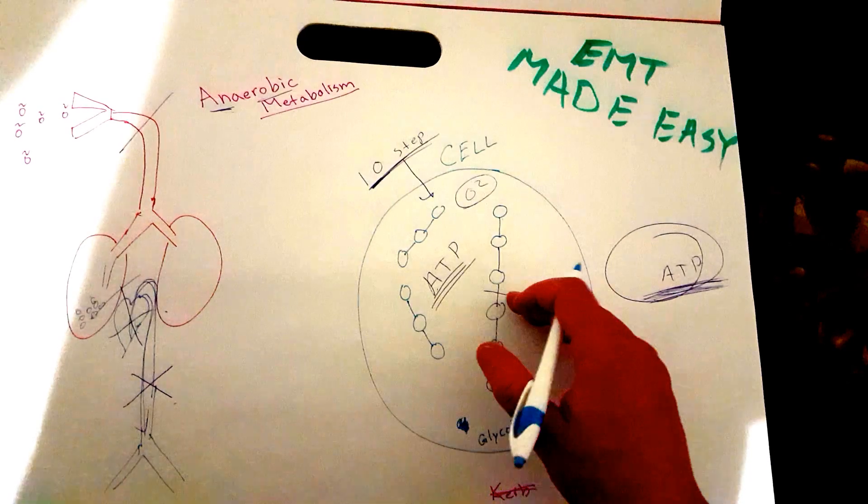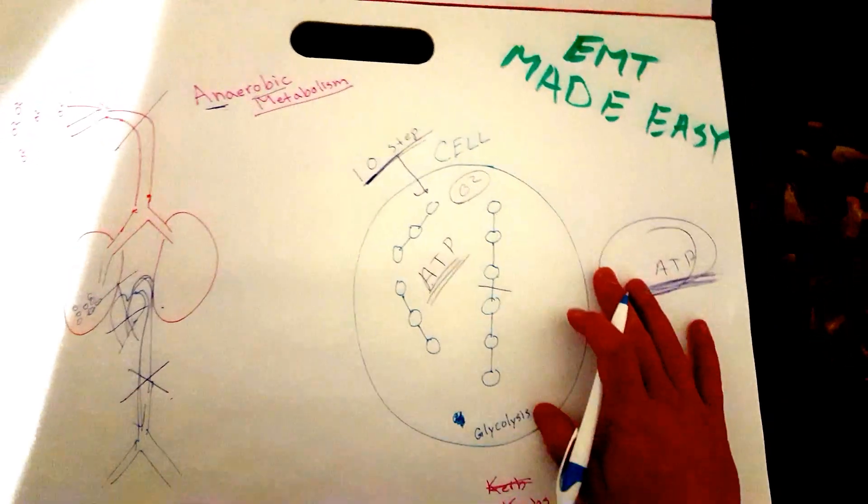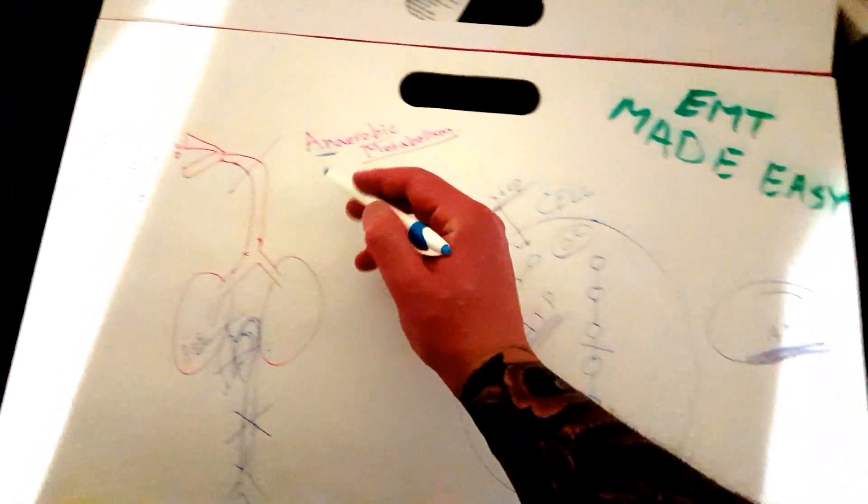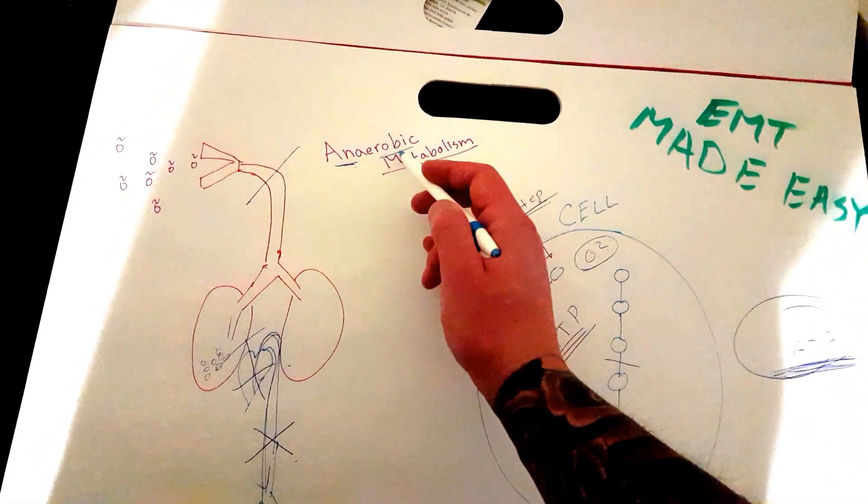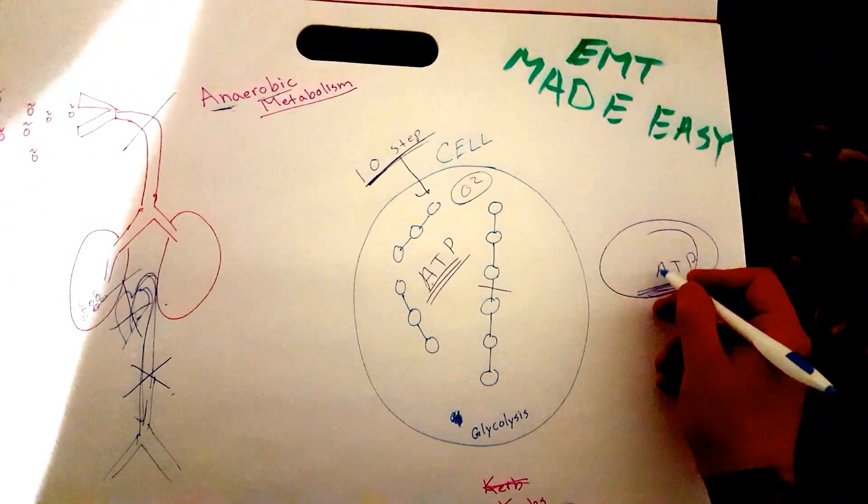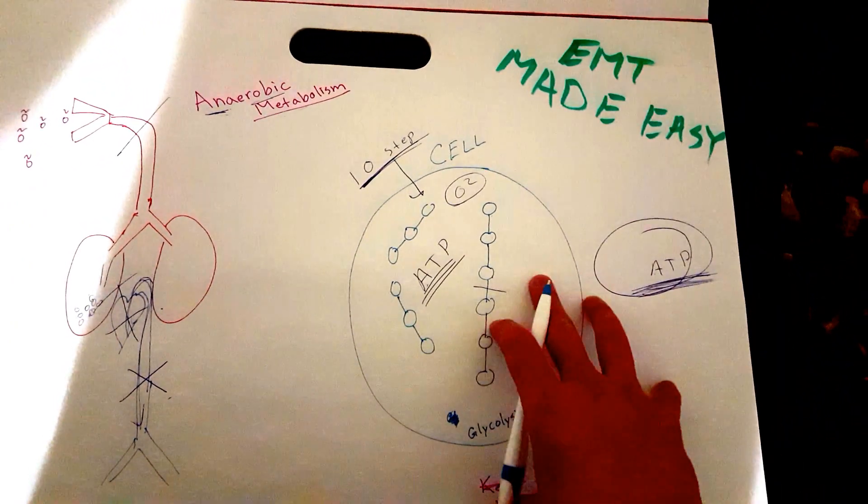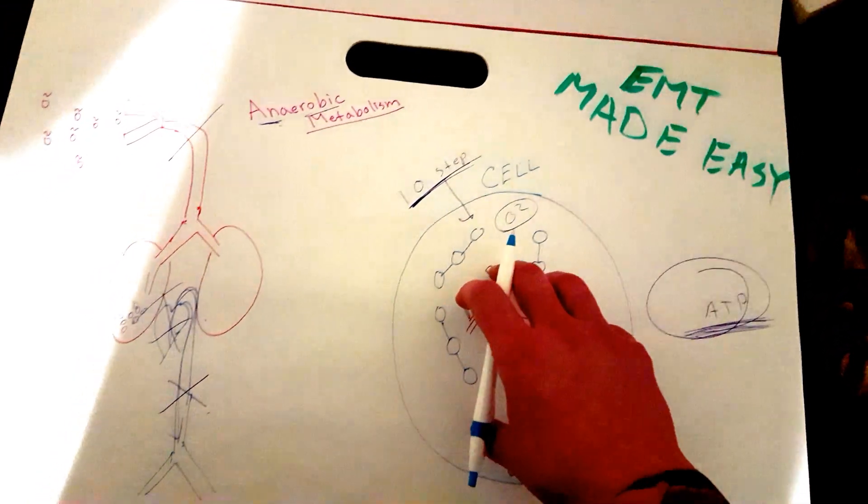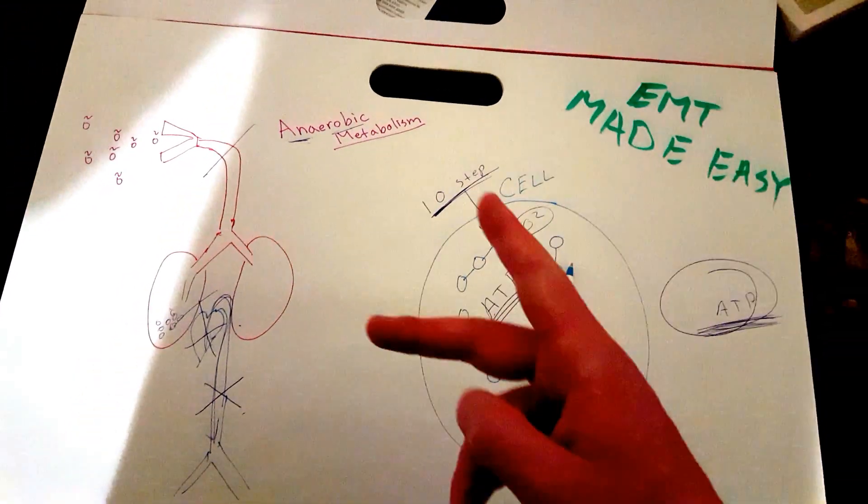And just don't forget that ana means without, aerobic we're talking about oxygen, metabolism is the production of stored energy ATP—adenosine triphosphate. And we're not making enough ATP, but we still are making ATP without oxygen. All right, catch you guys later, bye.